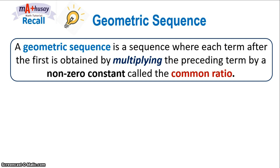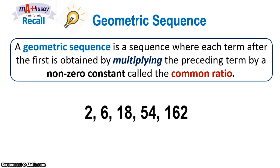For example, the sequence 2, 6, 18, 54, and 162 can be generated by multiplying 3 to the preceding terms. Hence, the common ratio is 3.